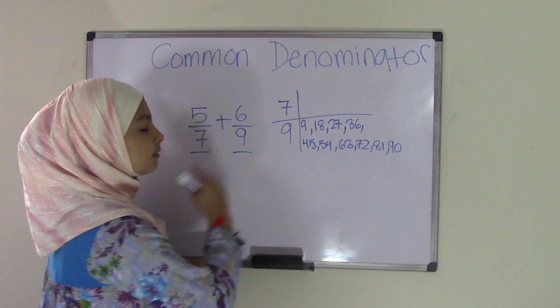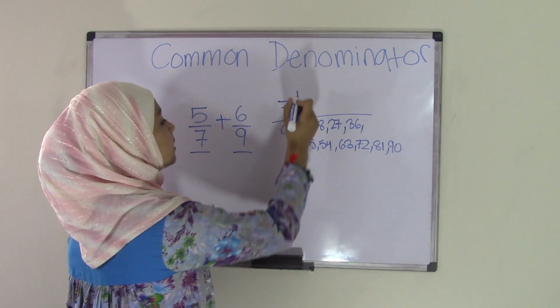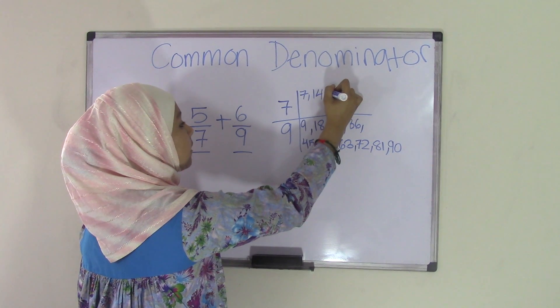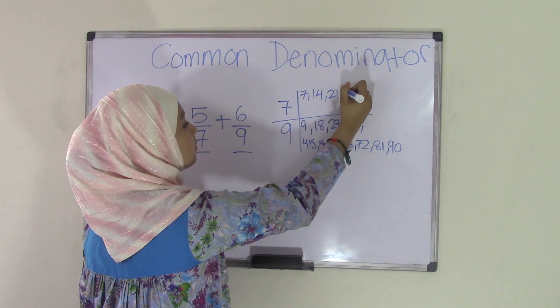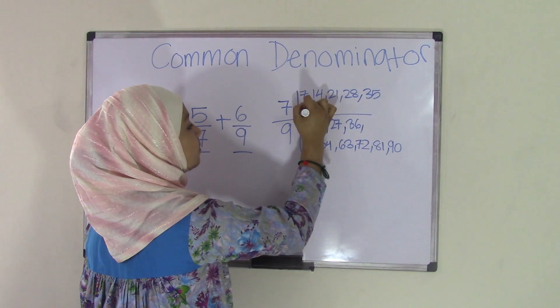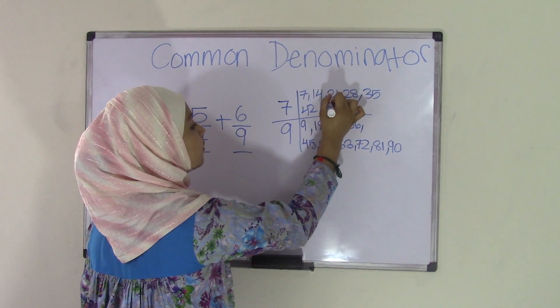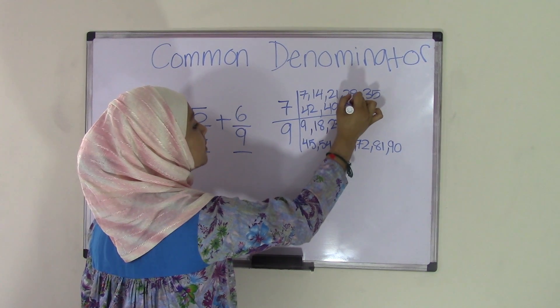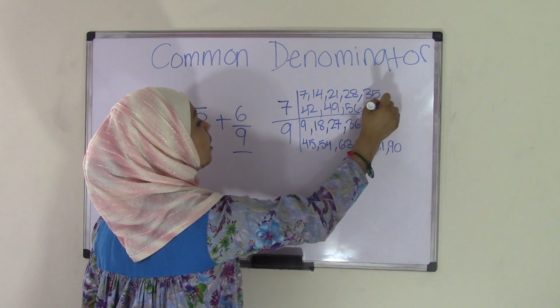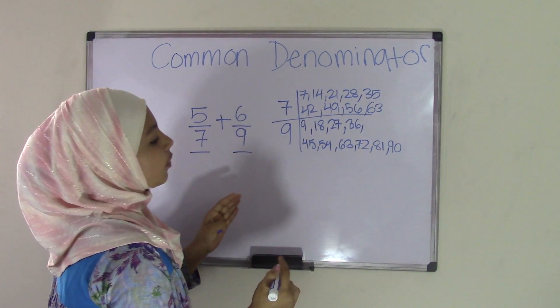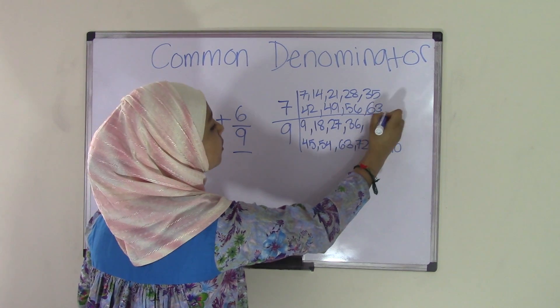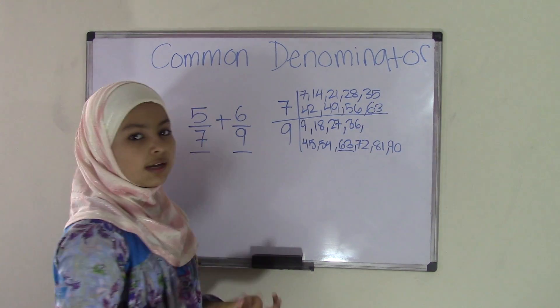I'm going to do the same thing with 7. So 7 times 1 is 7, 7 times 2 is 14, 7 times 3 is 21, 7 times 4 is 28, 7 times 5 is 35, 7 times 6 is 42, 7 times 7 is 49, 7 times 8 is 56, 7 times 9 is 63. I stopped there because I found a common multiple of 63, so I do not need to go on.